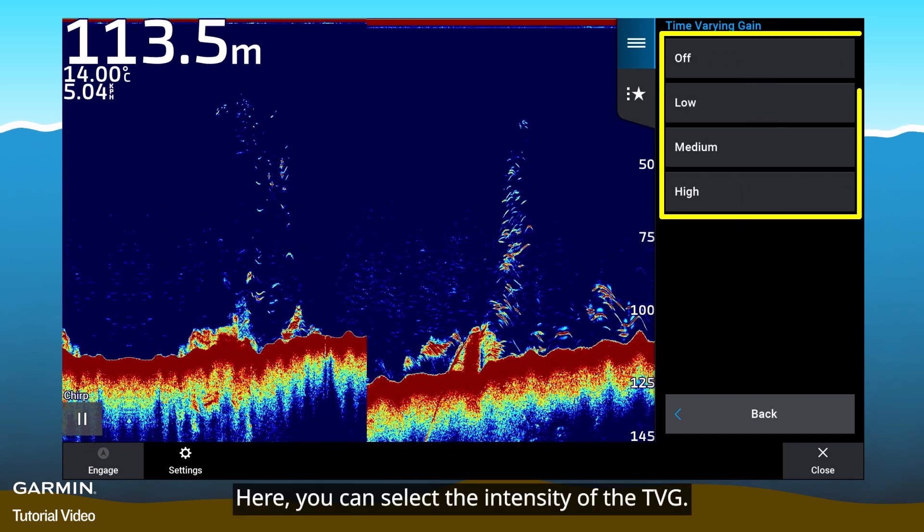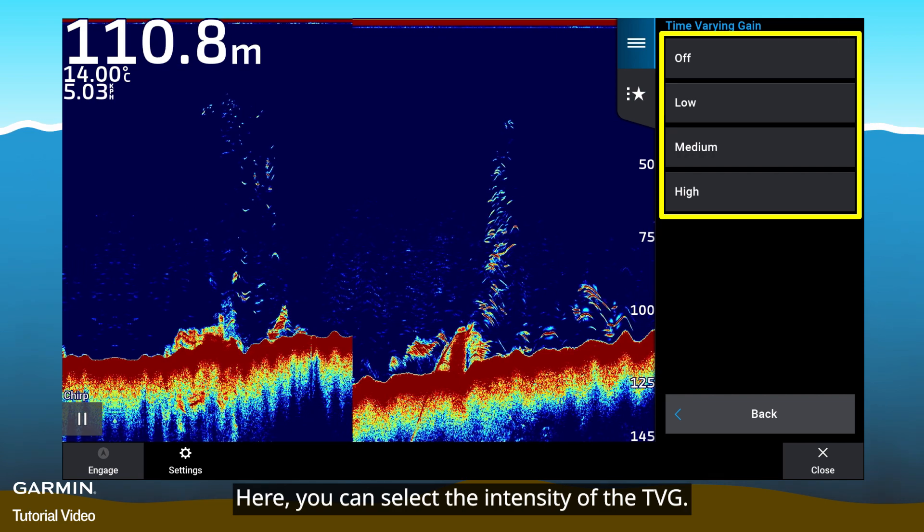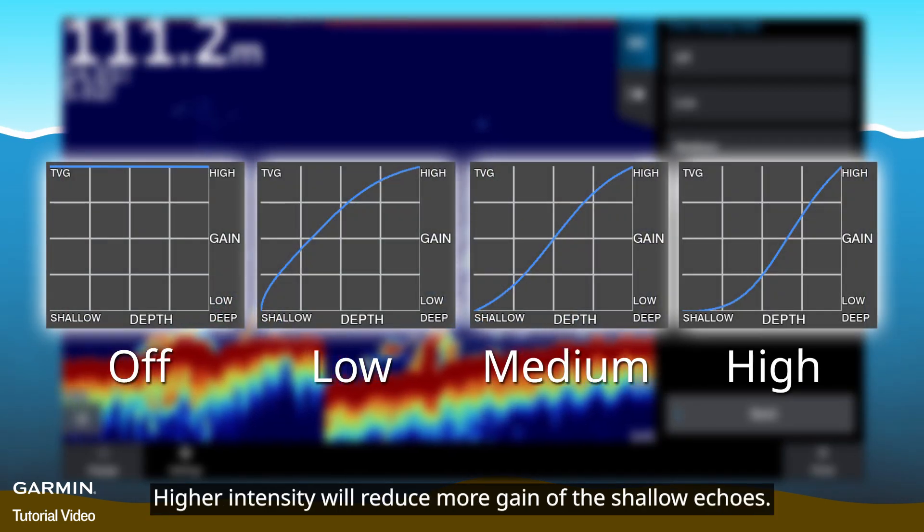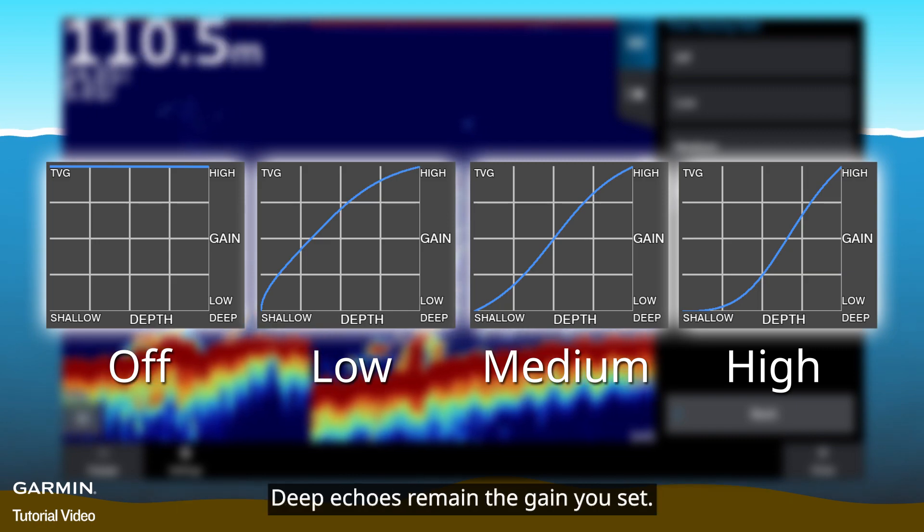Here, you can select the intensity of the TVG. Higher intensity will reduce more gain of the shallow echoes. Deep echoes remain the gain you set.